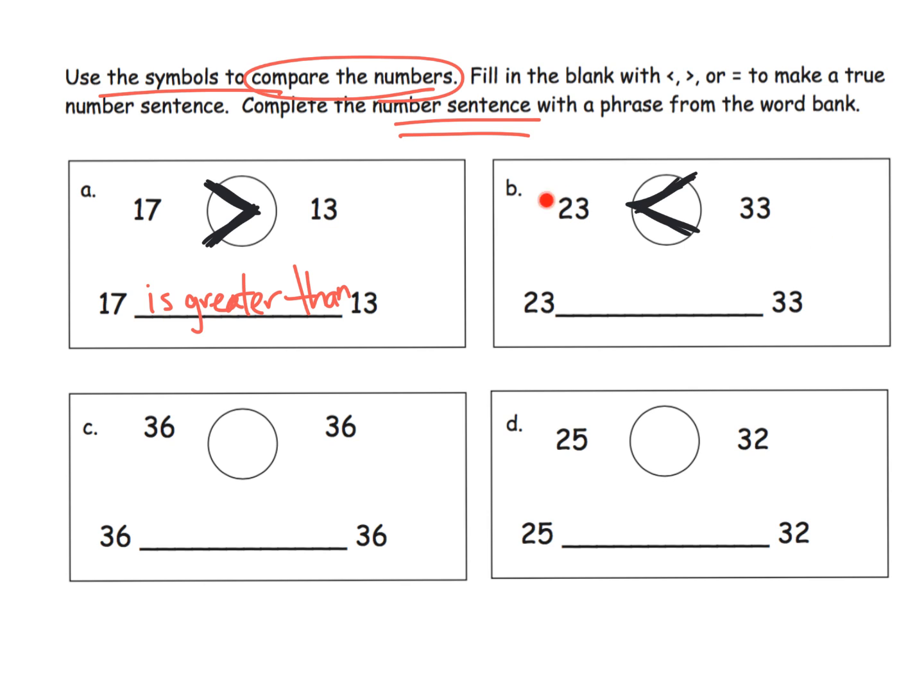But now we want to read it like a book and we want to say, well, how does 23 compare with 33? 23 is less than 33. So we're gonna put is less than 33. That's the idea—we're gonna always connect the symbol to the number sentence.